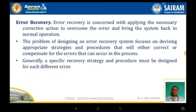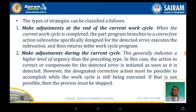Generally, a specific recovery strategy and procedures must be designed for each different type of error. The errors are classified as follows. The first type is to make an adjustment at the end of the current work cycle: when the current work cycle is completed, the part program branches to a corrective action subroutine specifically designed to detect the error, execute the subroutine, and then return to the work cycle program. The second type is to make the adjustment during the current cycle itself. This generally indicates a higher level of urgency. In this case, the corrective action to compensate for the detected error is initiated as soon as it is detected.